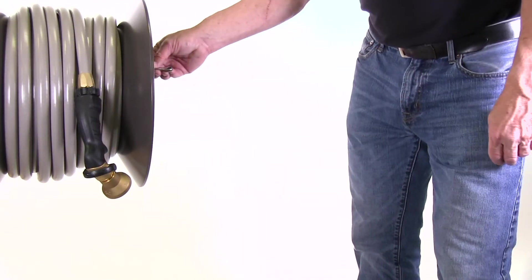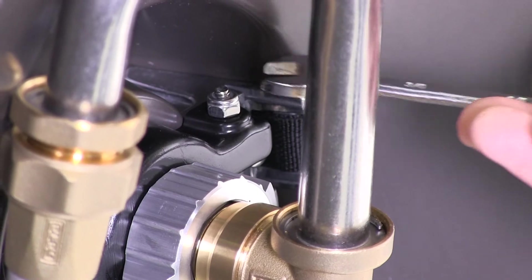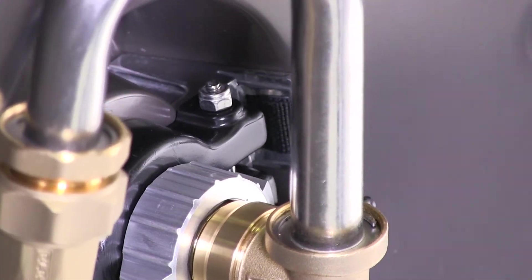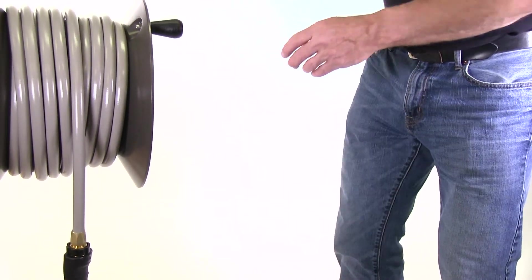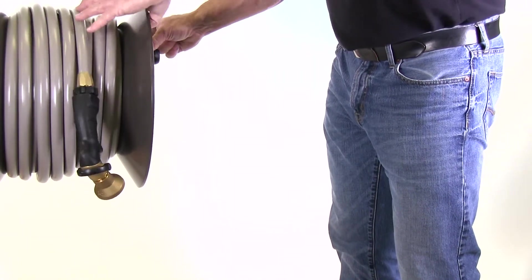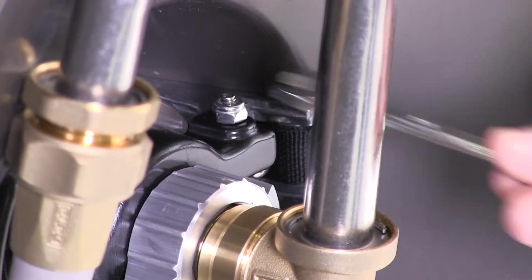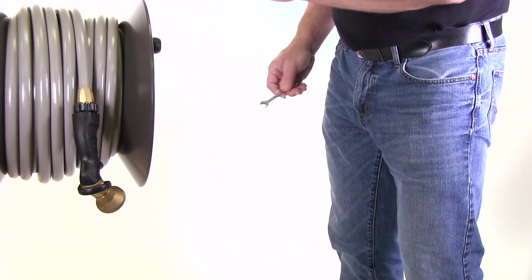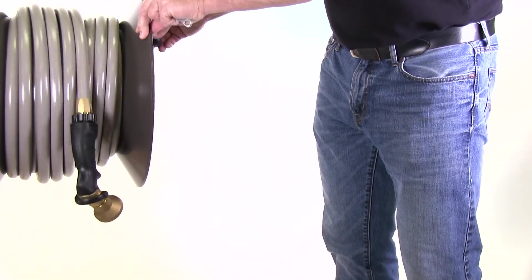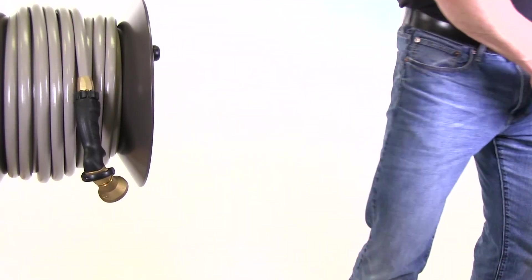To set the cam lever brake take a 7/16 inch wrench and loosen the adjustment nut until the weight of the watering tool on the end of the hose causes the reel to start unwinding by itself. Then tighten the nut a quarter turn at a time until the reel no longer unwinds by itself. You can adjust the nut to create just the right amount of drag to your liking.